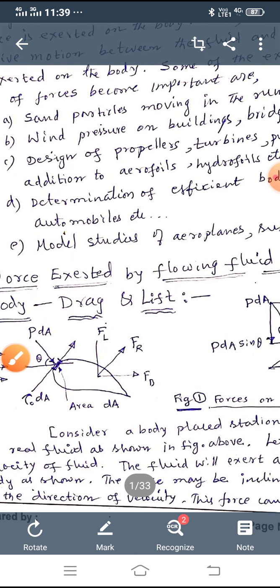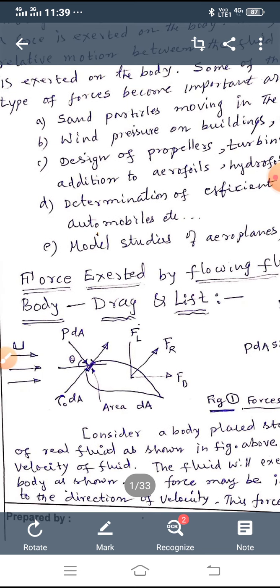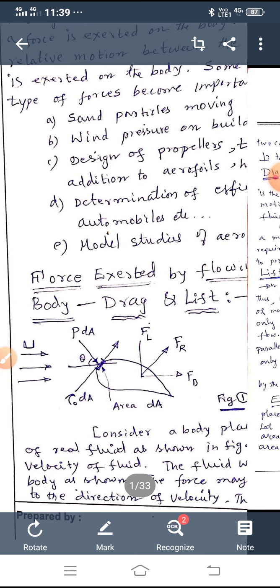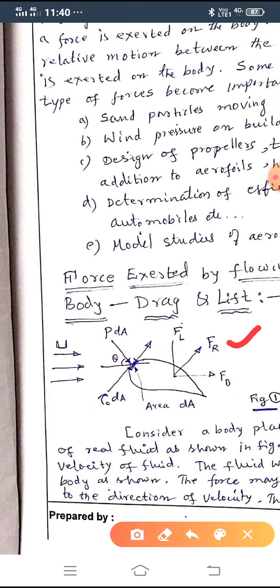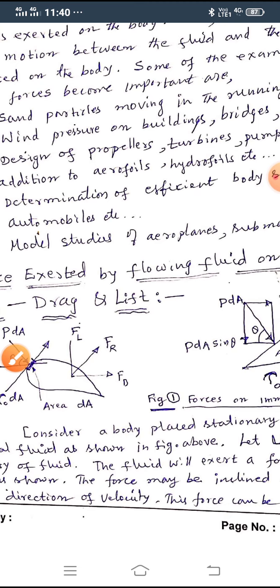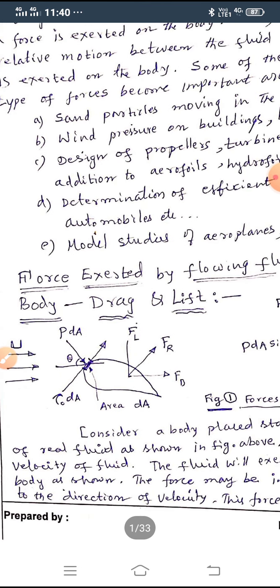Now, we will see the force exerted by flowing fluid on a stationary body. There are two components to be defined based on this drag and lift. As shown in figure, a body is placed in the stream of fluid, which is moving with a velocity U. When it is acting on the body, there is a pressure exerted, which is represented by resultant force FR, that can be resolved into two components. One is FD, another one is FL, where FD is known as drag force and FL is known as lift force.